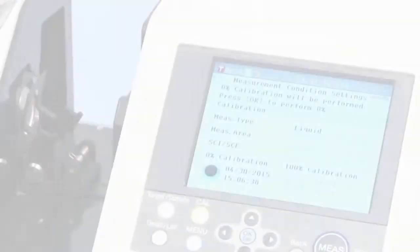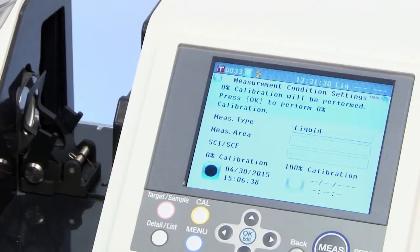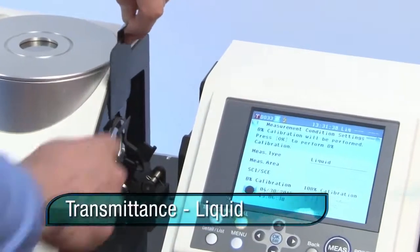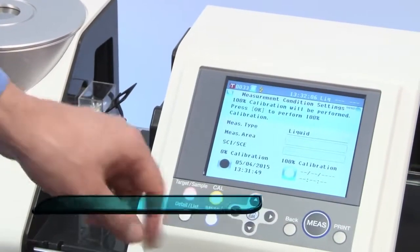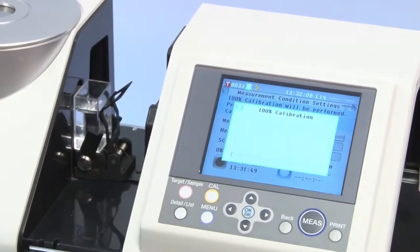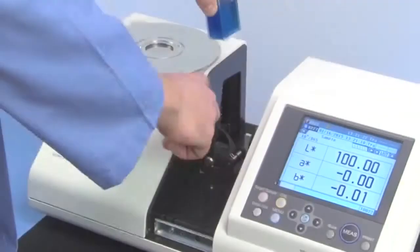The liquid mode will guide you through proper sample preparation, which includes zero calibration inside the transmittance chamber, as well as a simultaneous white calibration, clear water, and cell holder calibration procedure before measurement.